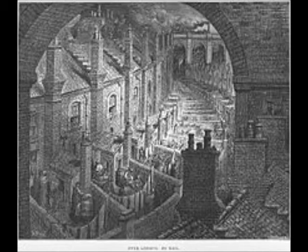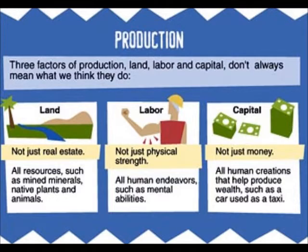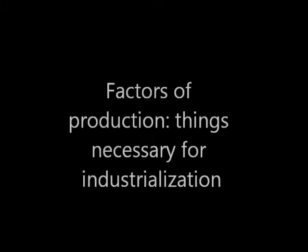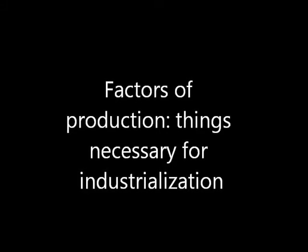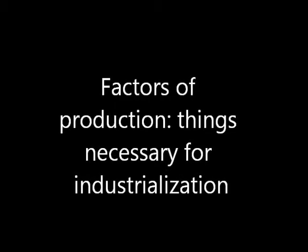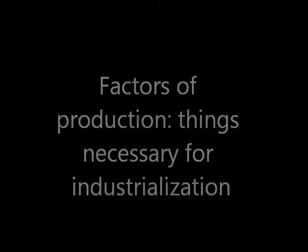The Industrial Revolution started in Great Britain for four primary reasons. Write these down. The first reason is geography. Great Britain had all the resources it needed to industrialize — like timber, coal, harbors, rivers, and iron. So Great Britain had all of what we call the factors of production. That's a term used to describe the things that are necessary for any society to industrialize or make progress.